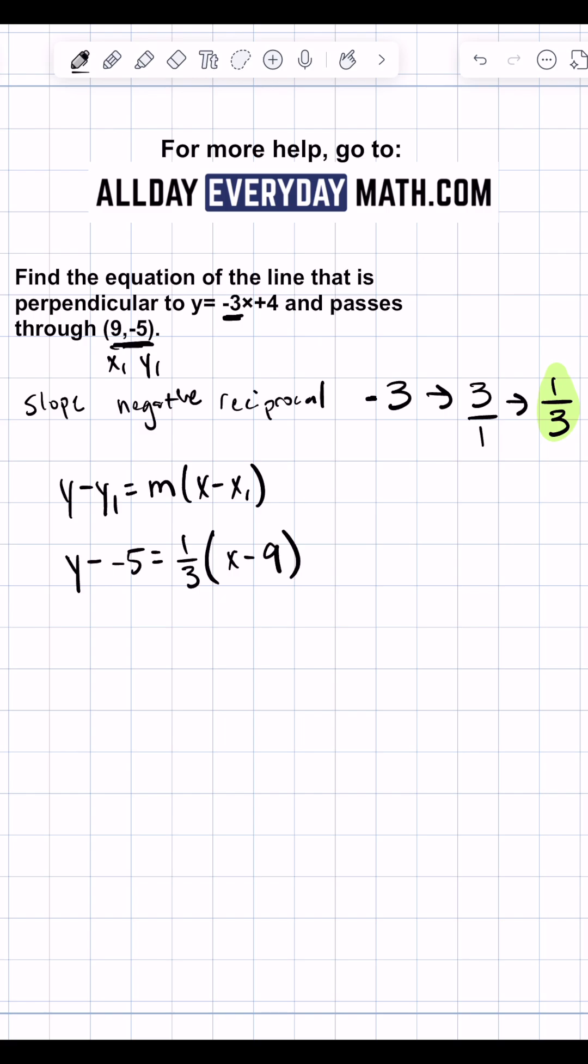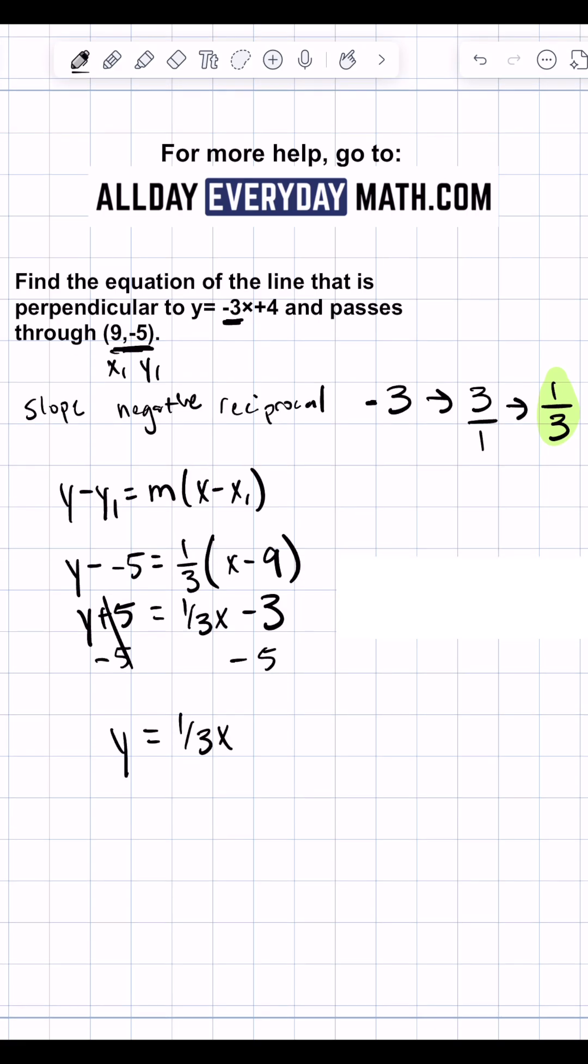So this becomes y plus 5 equals one third x. And then one third times negative 9 is just negative 3. So we're going to subtract 5 from both sides to get y equals one third x. And then negative 3 minus 5 is negative 8.